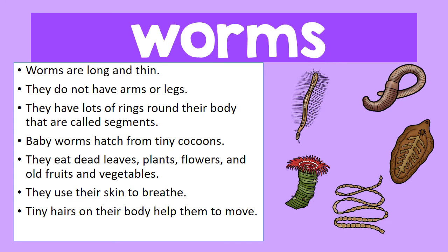Now let's look at the group of worms. Worms are long and thin. They do not have arms or legs. They have lots of rings around their body that are called segments. Baby worms hatch from tiny cocoons. They eat dead leaves, plants, flowers, and old fruits and vegetables. They use their skin to breathe. Tiny hairs on their body help them to move.